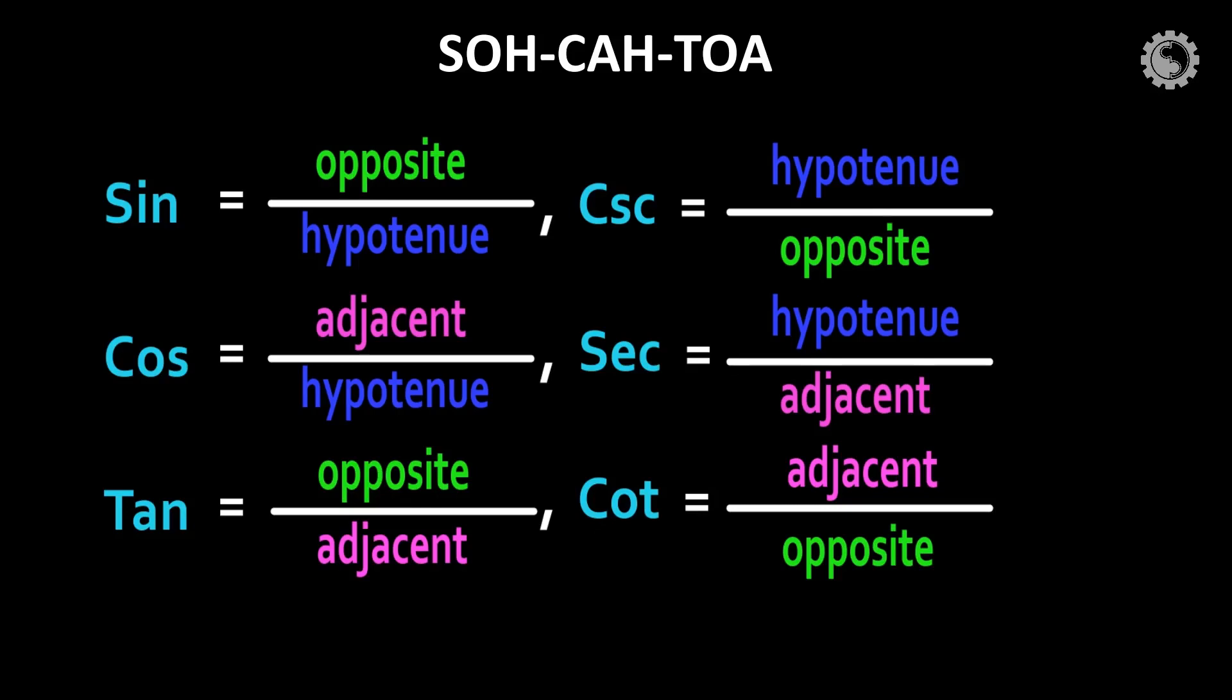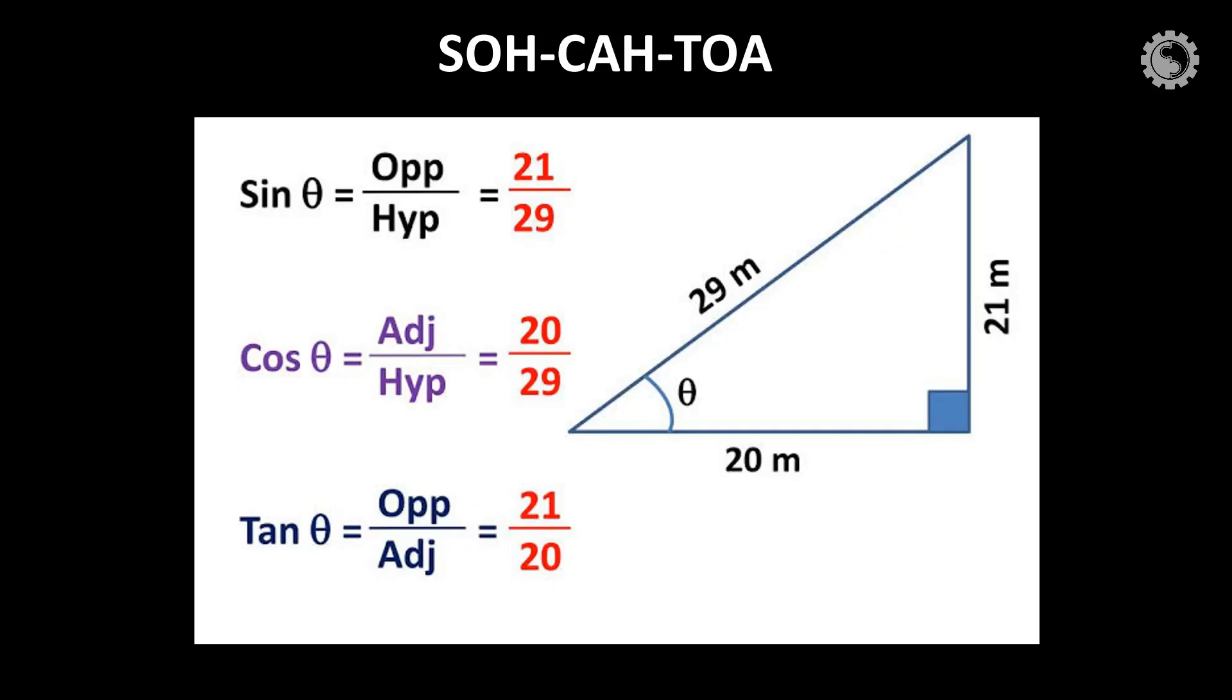Let's solve a simple problem to understand the working of those functions. Where the right triangle has 26 meters hypotenuse, opposite and adjacent have 21 and 20 meters. By applying the corresponding formulas, we get divided values.